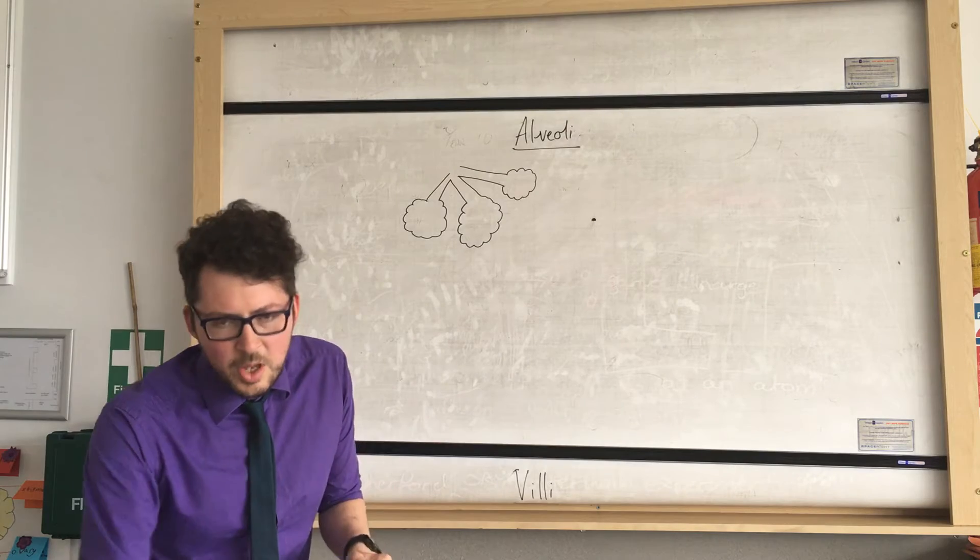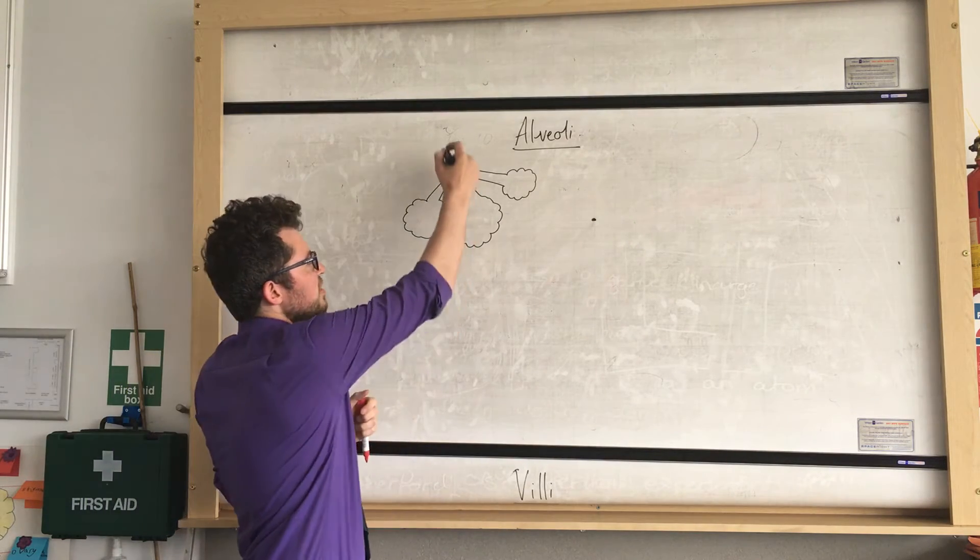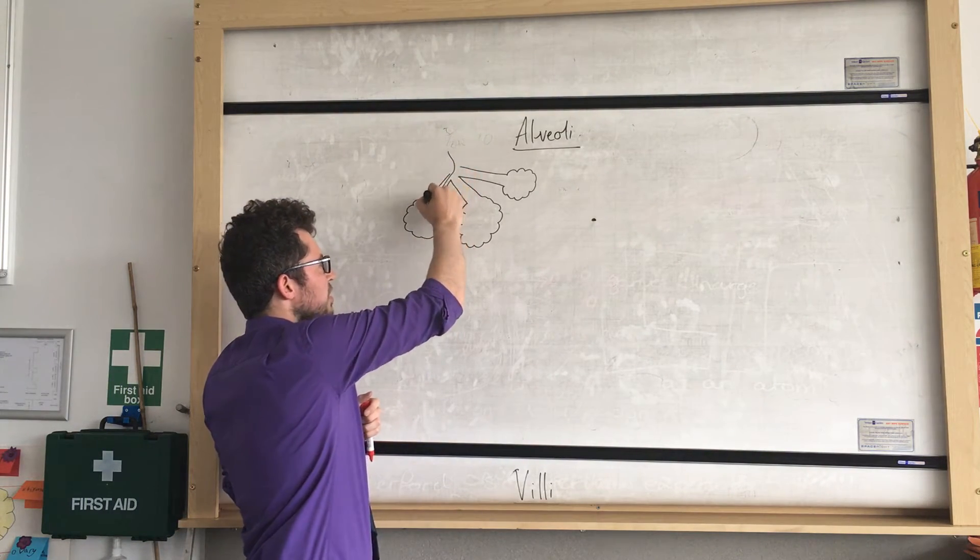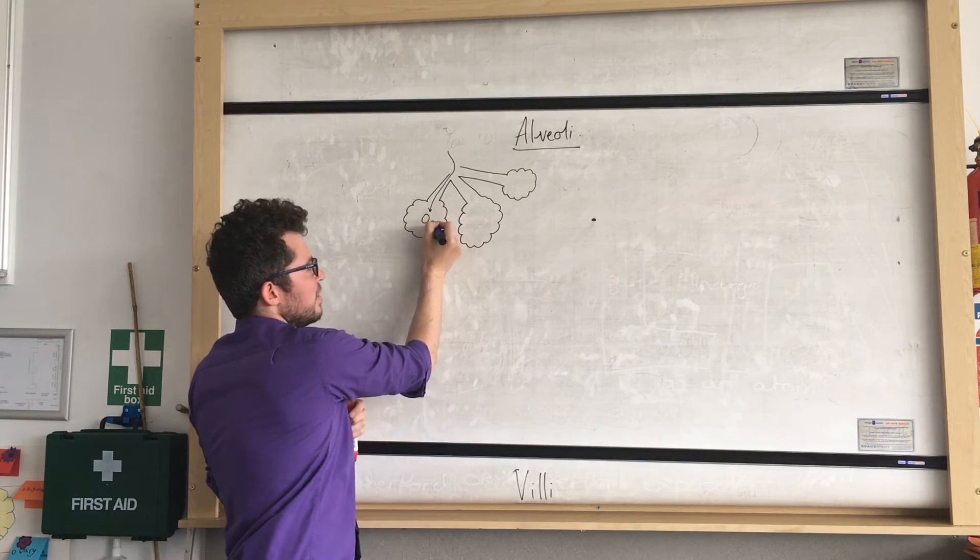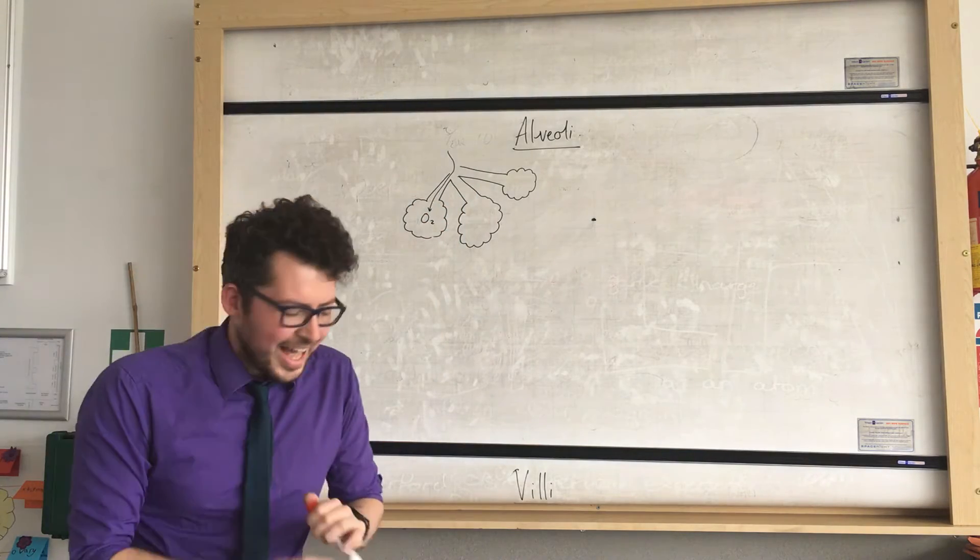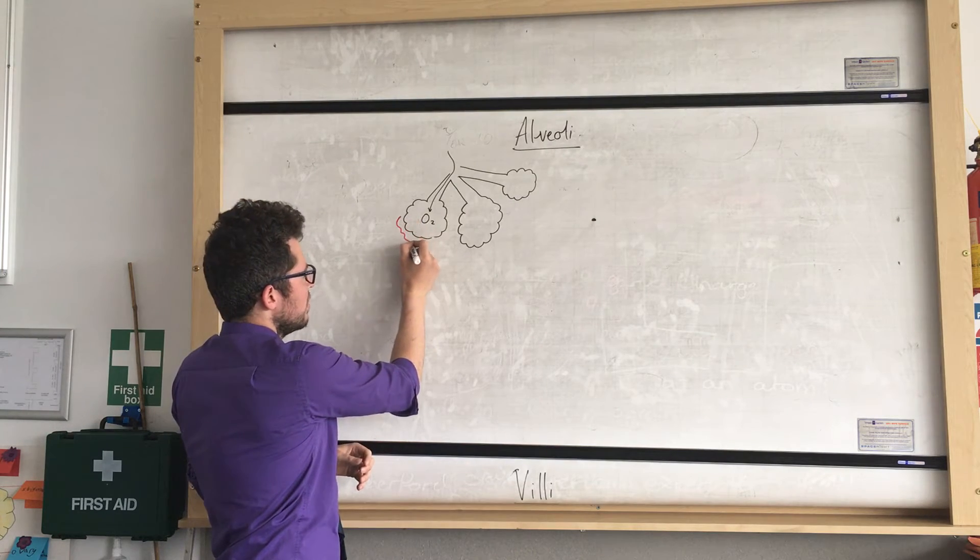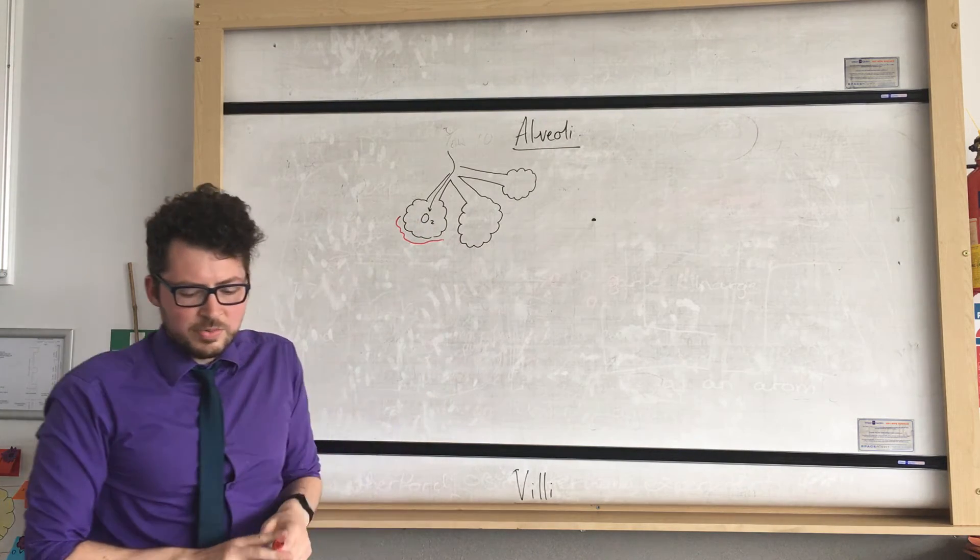Okay, so what happens is when we breathe in, oxygen moves into our alveoli. So oxygen moves in, and then that oxygen - this drawing here is a blood vessel surrounding it -